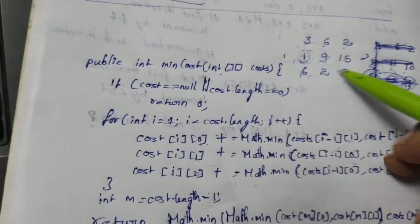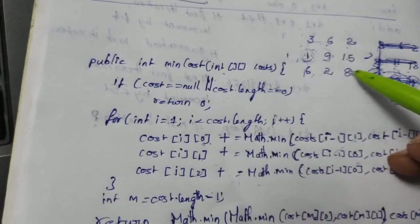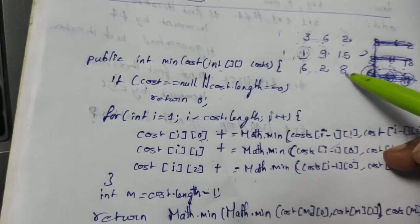At the end we will get all the prices for each color of combinations. So ultimately if we choose the minimum of the last row we will get the minimum price.